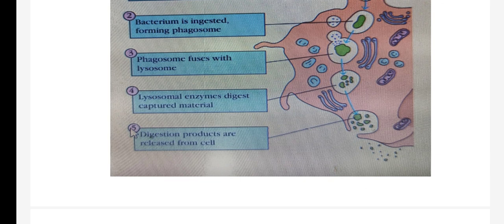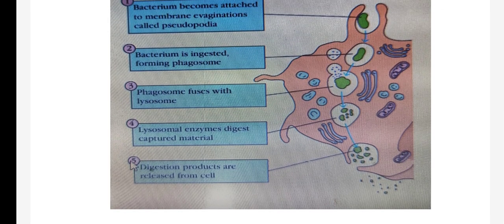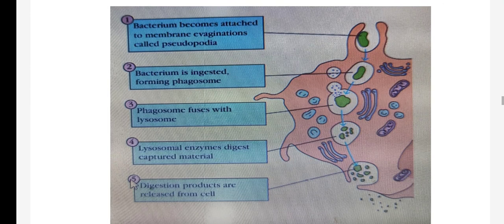After digestion, the products are released out from the macrophage. This is how the process of phagocytosis works. The main purpose is to remove the microorganism from the body — this is one type of non-specific defense mechanism which helps in clearing infection. The second role of the macrophage in the specific defense mechanism, where it acts as an antigen presenting cell, will be discussed in the next lecture.